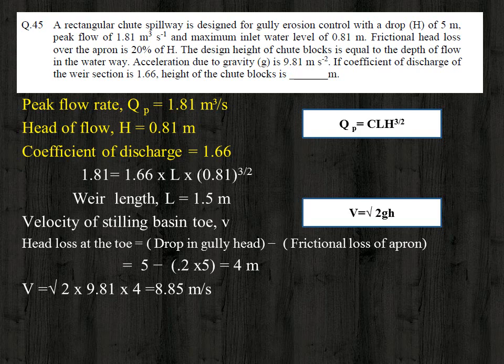The clue given is that the design height of the chute block equals the depth of flow in the waterway. So we need to find the depth of flow in the waterway.